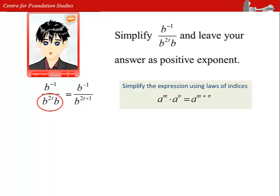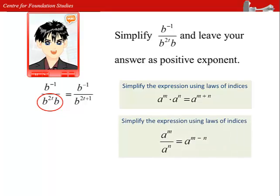Combining the b to the power of 2t times b, we get b to the power of 2t plus 1. Now, we use the following law to help us.